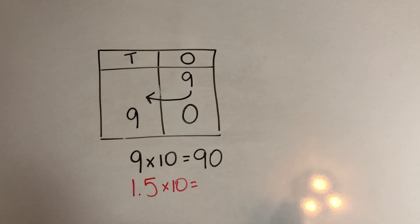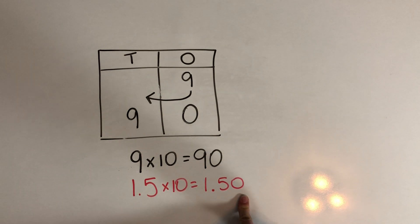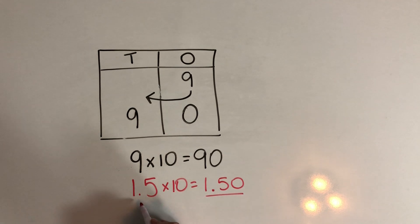So if we take 1.5 times 10, can we just add a 0 and make it 1.50? No, we can't because 1.50 and 1.5 are the exact same. They have the same value. They both have 1 one and 5 tenths.